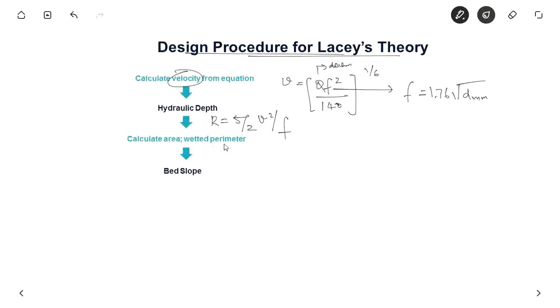Then what you do is, you calculate the area and wetted perimeter. So area you know, q is equal to av, where you know the discharge, you know velocity as well from this equation. So you can calculate A and wetted perimeter goes by the formula P equal to 4.75 root of q. So you can find wetted perimeter as well.